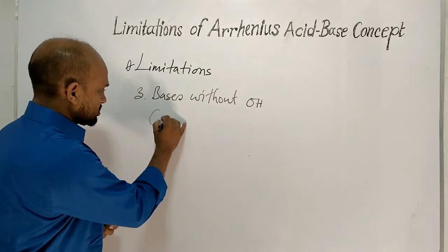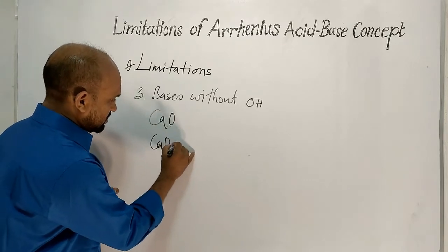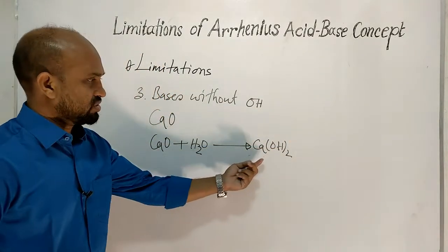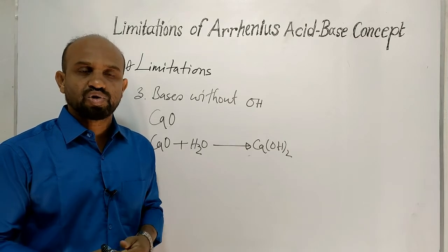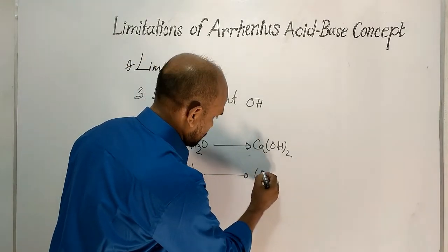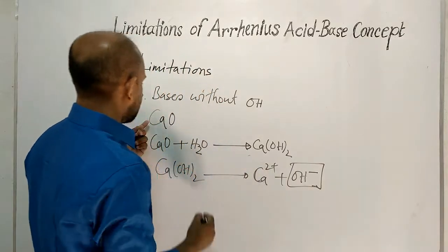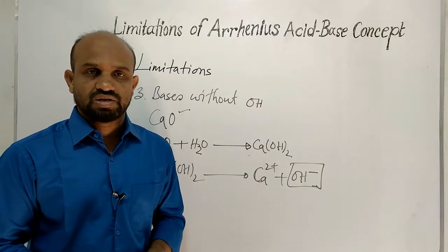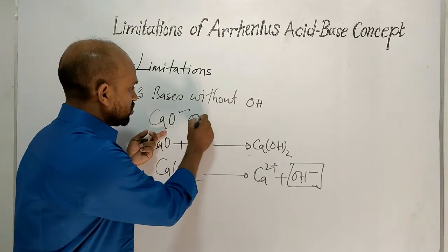Another compound is calcium oxide, which is a basic compound. When calcium oxide is dissolved in water, calcium hydroxide is formed. Calcium hydroxide is sparingly soluble in water, but it does dissociate to Ca²⁺ and hydroxide ions. So calcium oxide produces hydroxide ions in water and is therefore a weak base, even though it has no OH group.